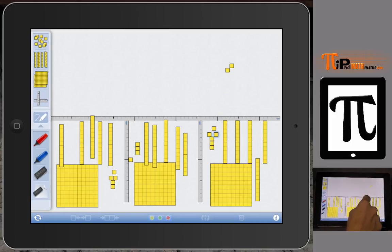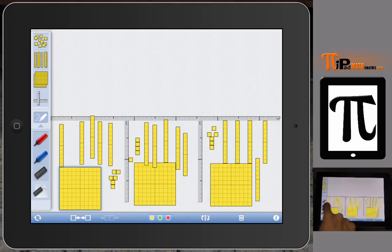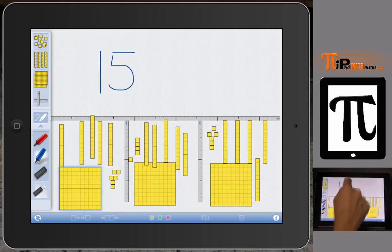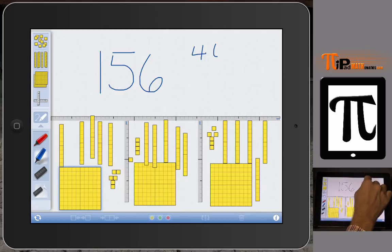And now this one comes out nice and even. So now we've taken all of our blocks, 468, and we've divided it by three, and now we record what's in each of our sections. So that's going to be 100, we have five longs so that's 50, and then we have six units. So 468 divided by three equals 156.